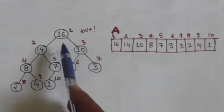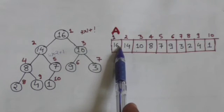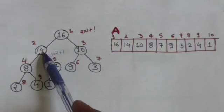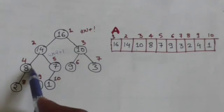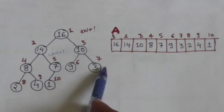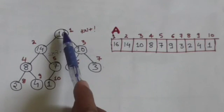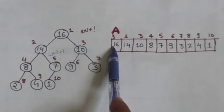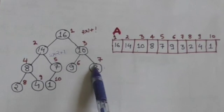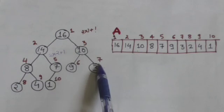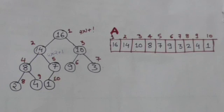In simple words, the root of a heap is stored as the first element of the array. Then the nodes of the next level are stored in the array from left to right. Then the nodes of the following level are stored from left to right, and this procedure continues until all the nodes of the heap are stored in the array.